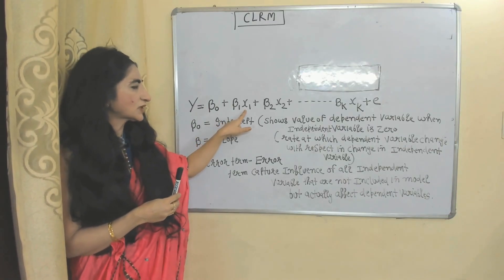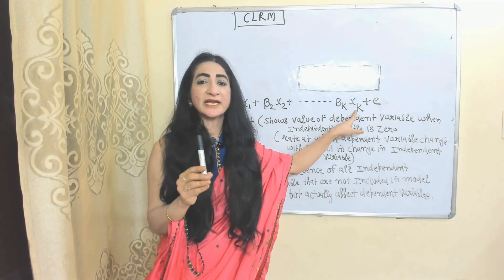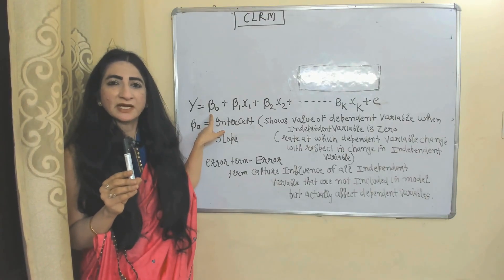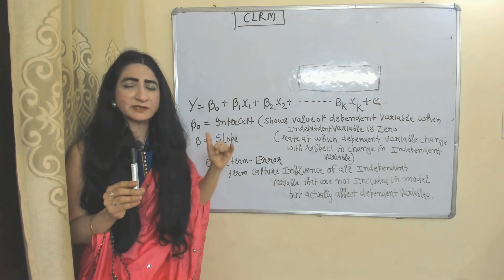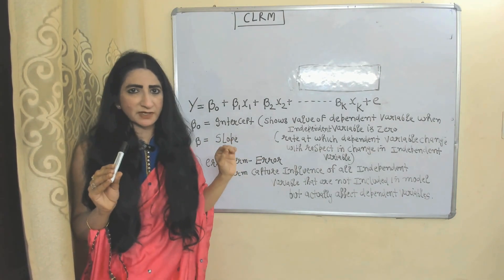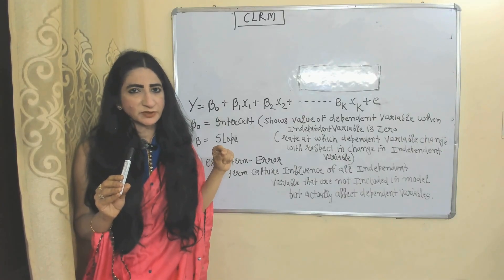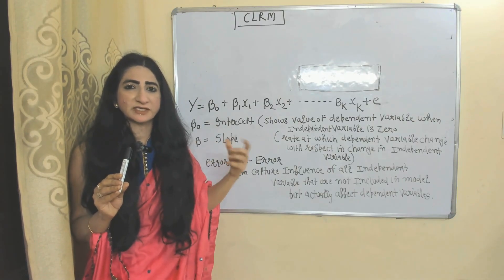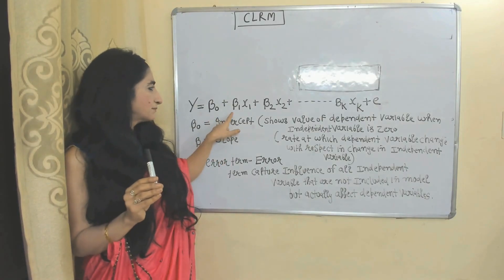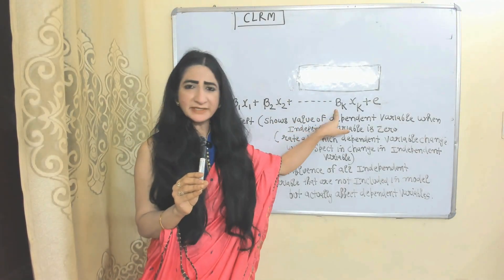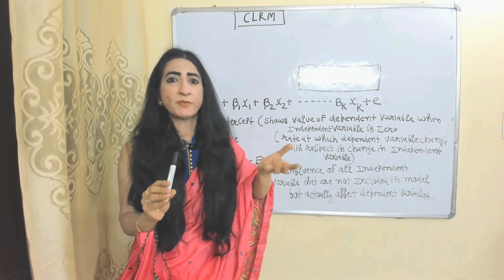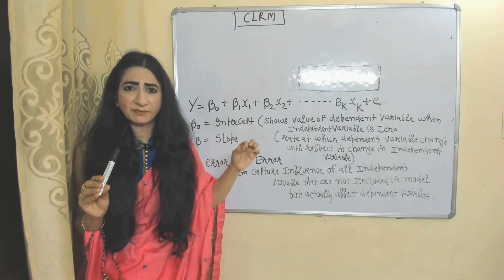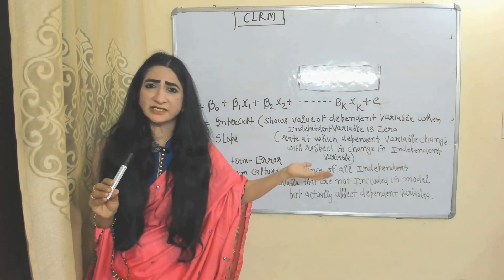The equation of the classical linear regression model: Y is the dependent variable; X1, X2, ... Xk are independent variables. Beta-0 shows the intercept — the value of the dependent variable when the independent variable is 0. For example, autonomous consumption acts as an intercept because it shows consumption when income is 0. Beta-1, Beta-2, ... Beta-k show the slope of the line, which represents the rate at which the dependent variable changes due to change in the independent variable.